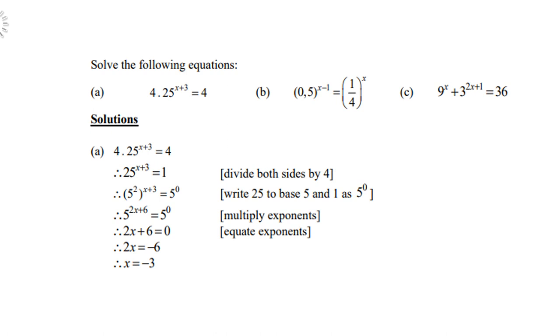Of course 1 is the same as 5 to the power of 0. And 25 is 5 to the power of 2, so therefore 5 to the power of 2x plus 6. If the bases are the same, then the exponents are equal. So 2x plus 6 equals 0.